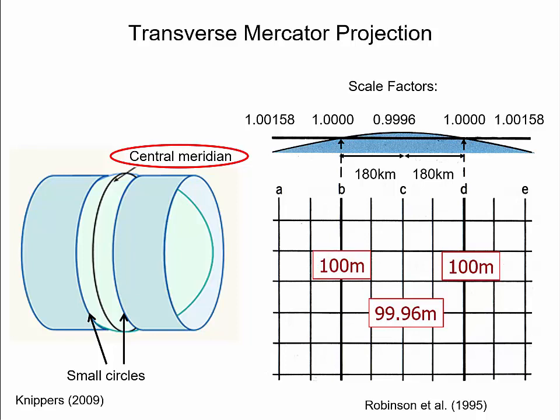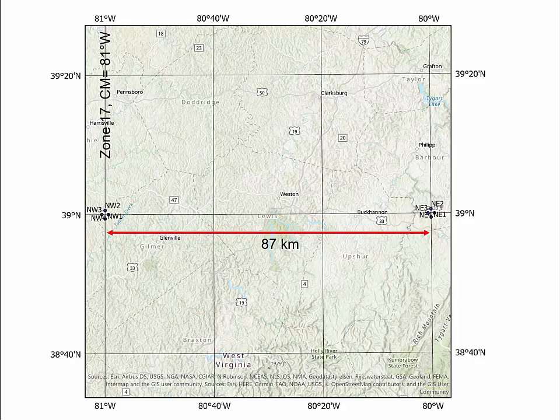These distortions can be verified in ArcGIS Pro for different directions. For this exercise, we use two groups of points located in UTM zone 17. The western group is located on or very close to the central meridian of UTM zone 17, which is at 81 degrees west longitude. The second group is located 1 degree, or about 87 km, east of the central meridian. We measure the north-south and east-west distance in each point group between corresponding point pairs, which are 0.02 degrees apart.